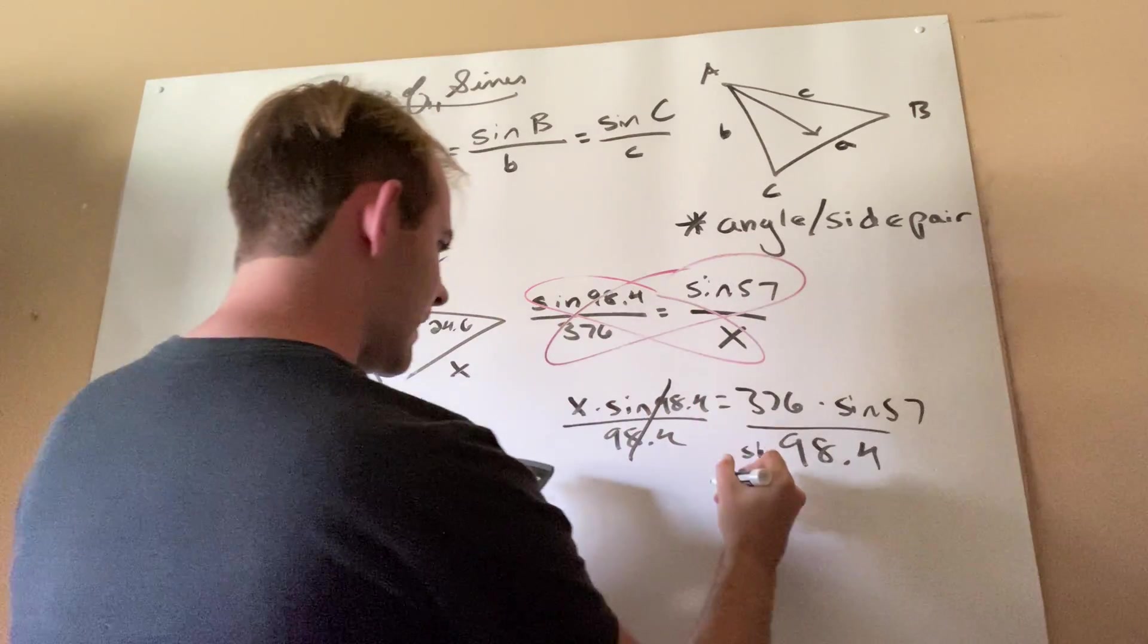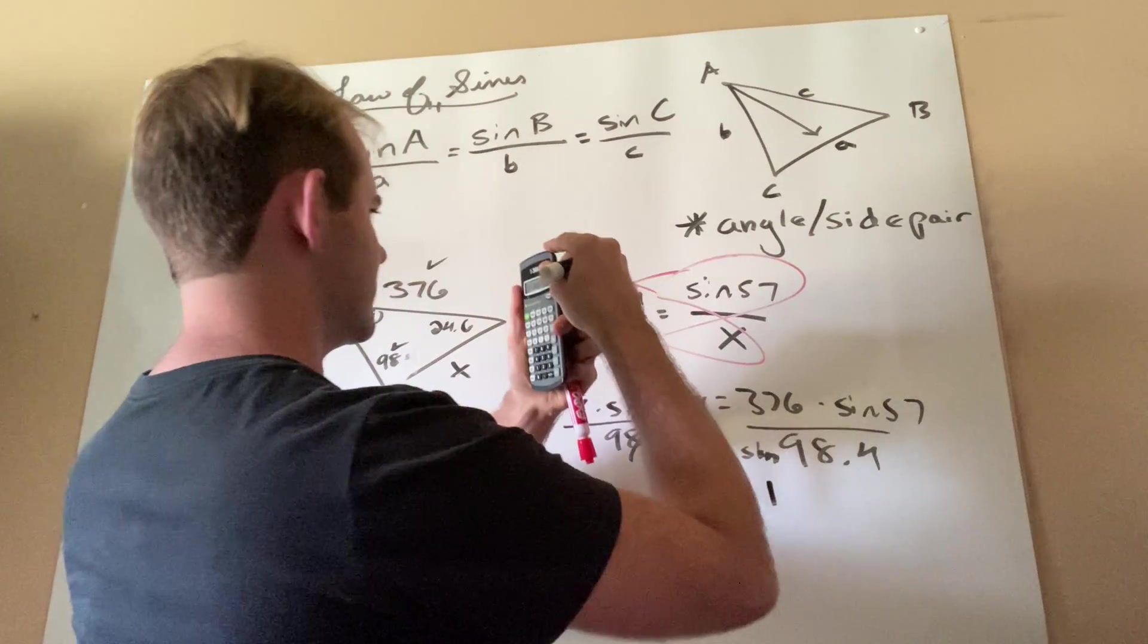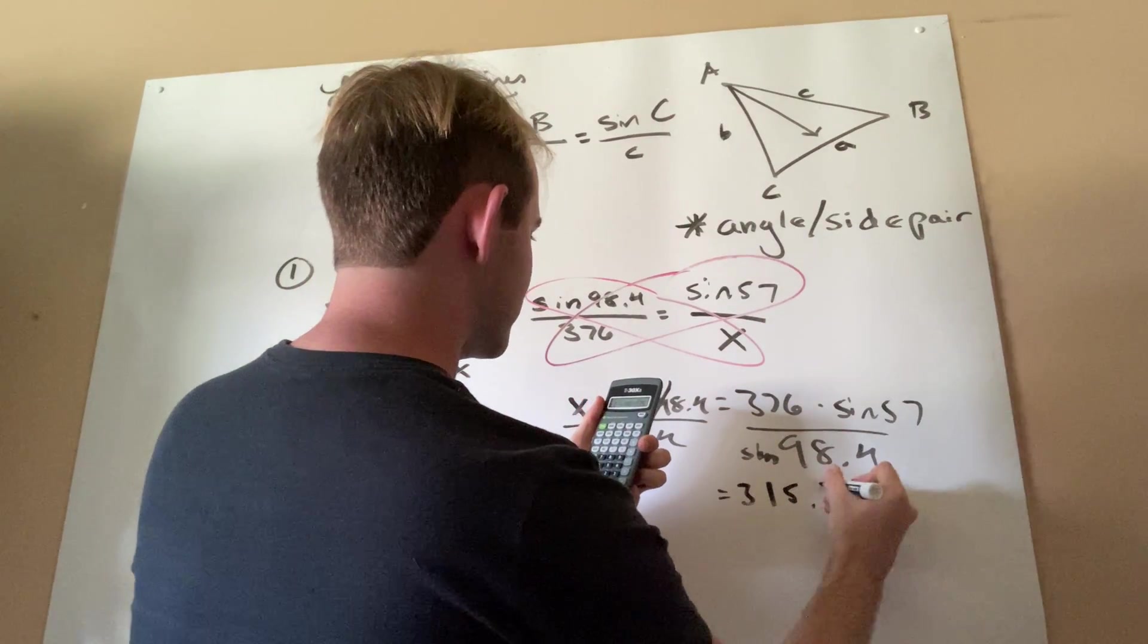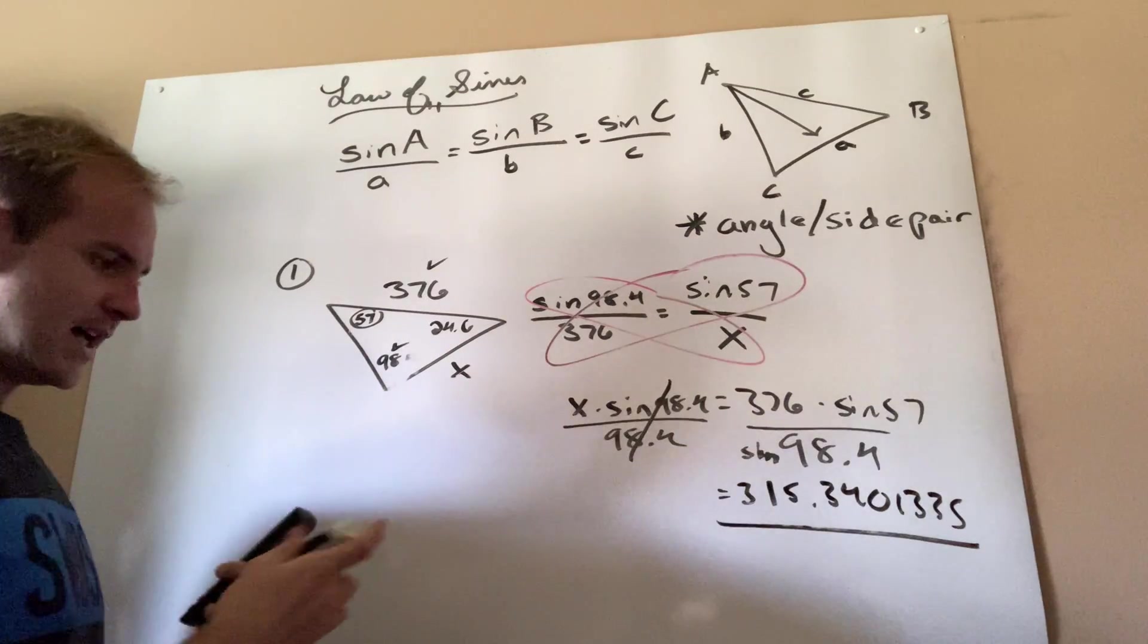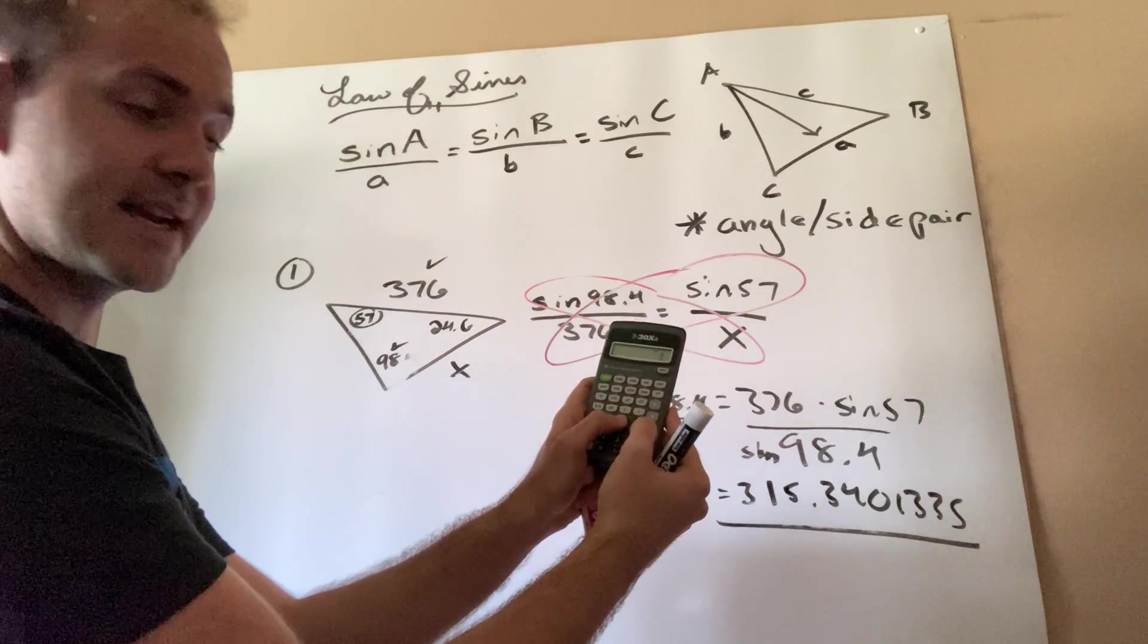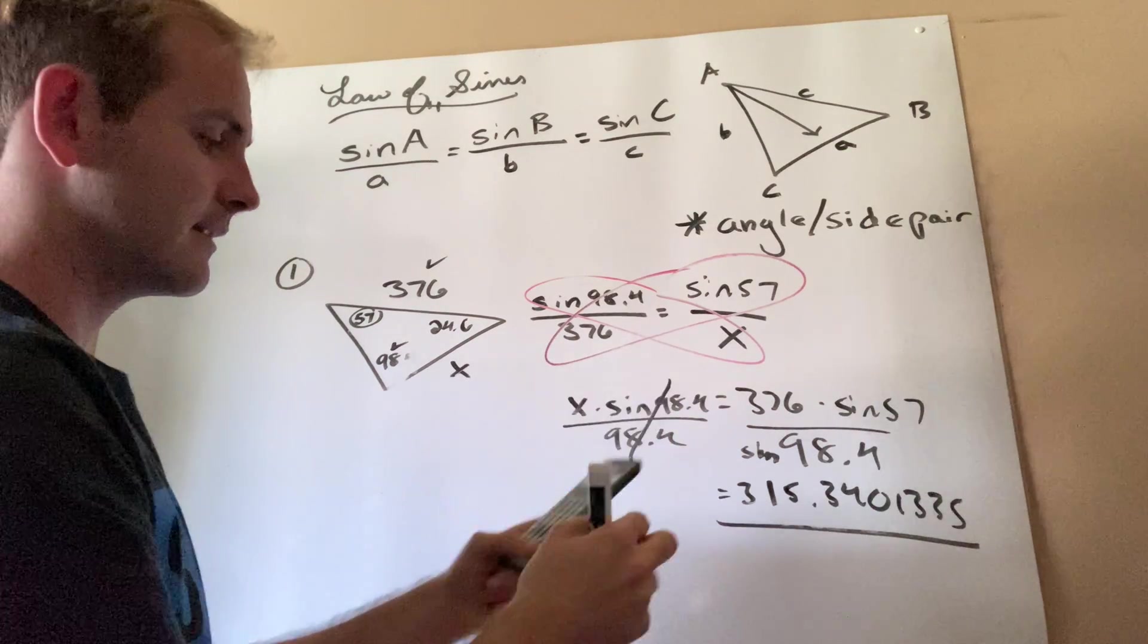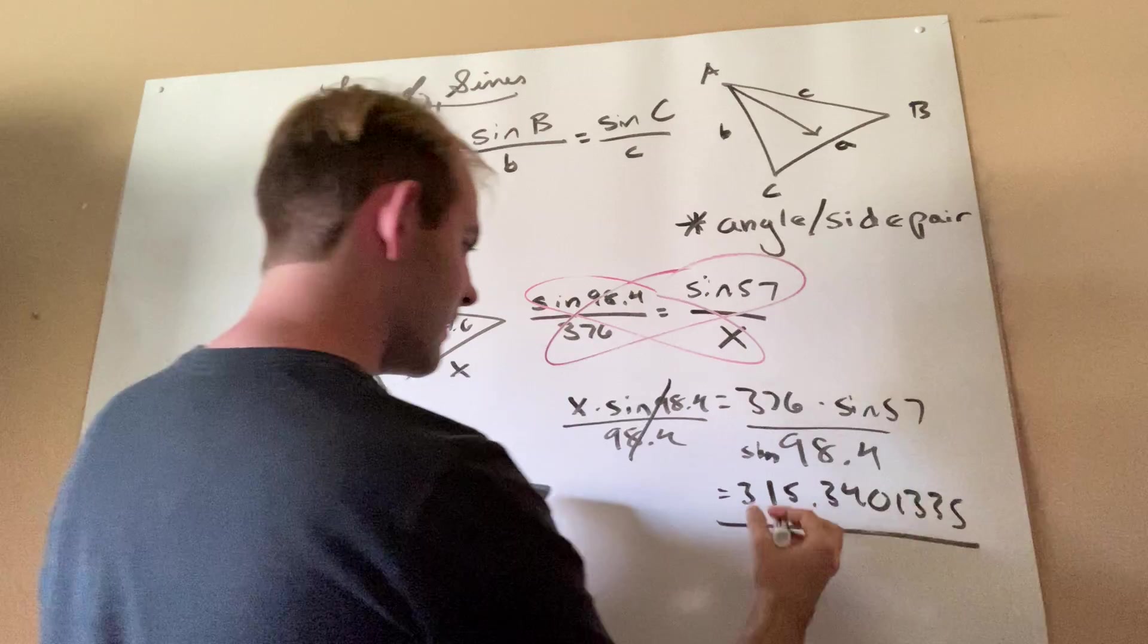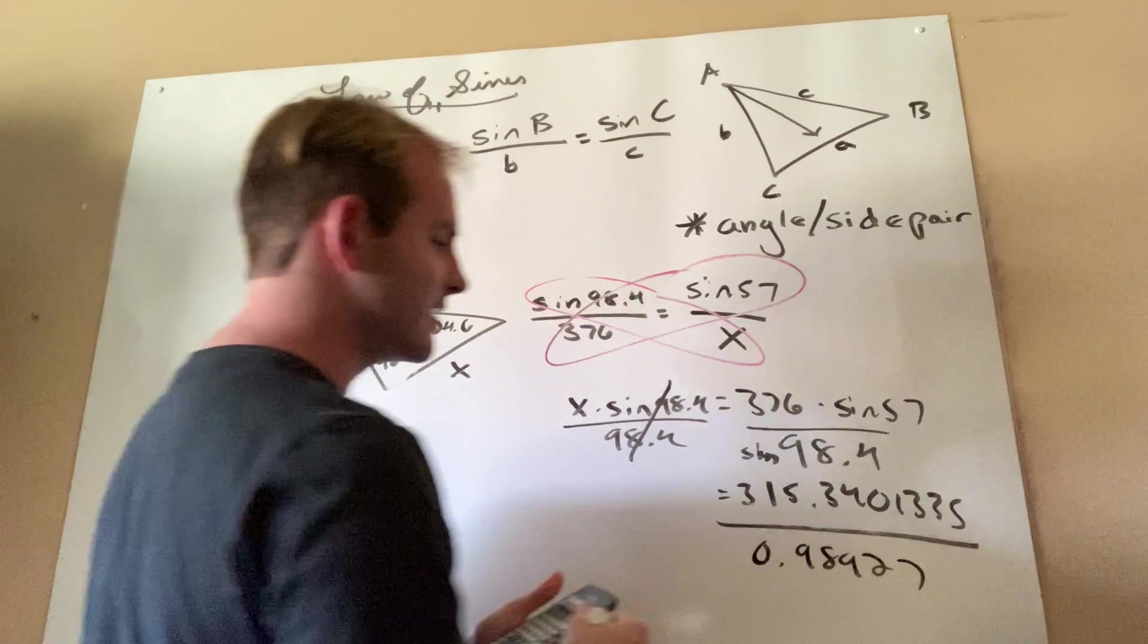So on top here, I'm going to have 315.3401335. And on the bottom, let's find out what sine 98.4 is. So I'm going to do 98.4 and then hit the sine key. And that is 0.98927.